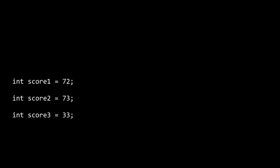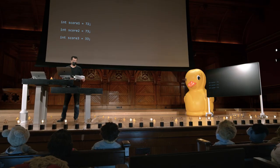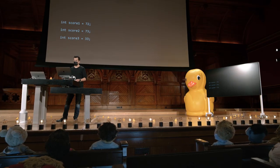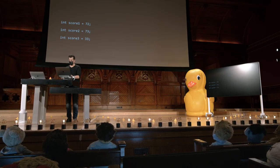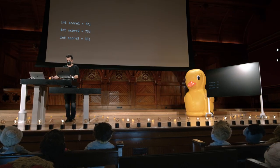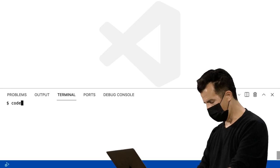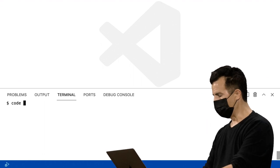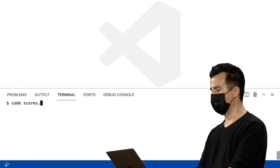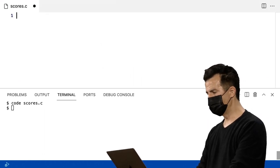E 33, que é particularmente baixo. Vamos escrever um programa que faça esse tipo de média para nós. Eu volto ao VS Code aqui. Vou abrir um arquivo chamado scores.c.